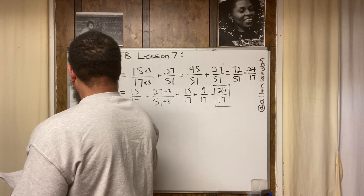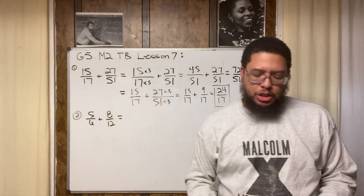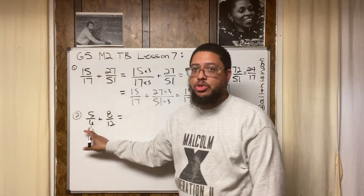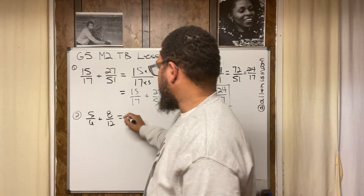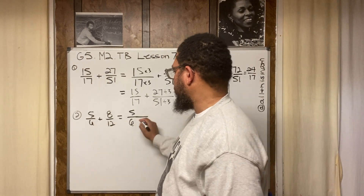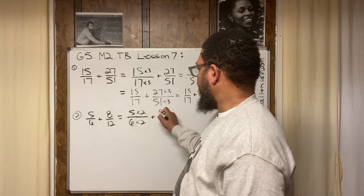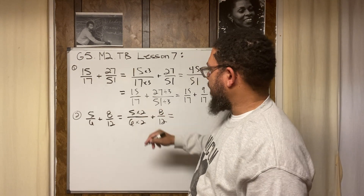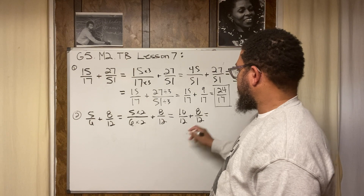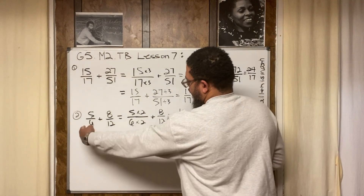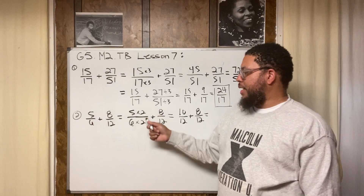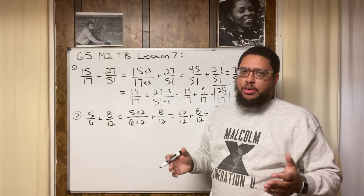Example 2: 5/6 plus 8/12. I can decompose the 5/6 by making the 6 into a 12 so we have common denominators. I multiply both the numerator and denominator by 2: 5 times 2 is 10, 6 times 2 is 12. So now I'm doing 10/12 plus 8/12. 10/12 is equivalent to 5/6 — I proved it by multiplying both by 2.